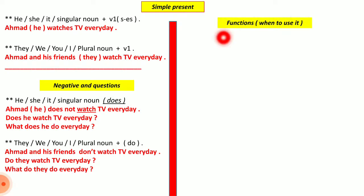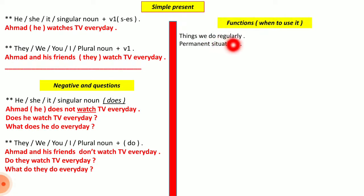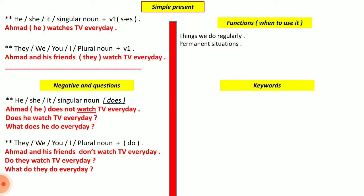Now let's cover the functions — when to use the simple present. The first use is for things we do regularly: actions done every month, every year, every hour, or habitually on a daily basis. The second use is for permanent situations — feelings, job, place of residence — if they are still ongoing in the present.